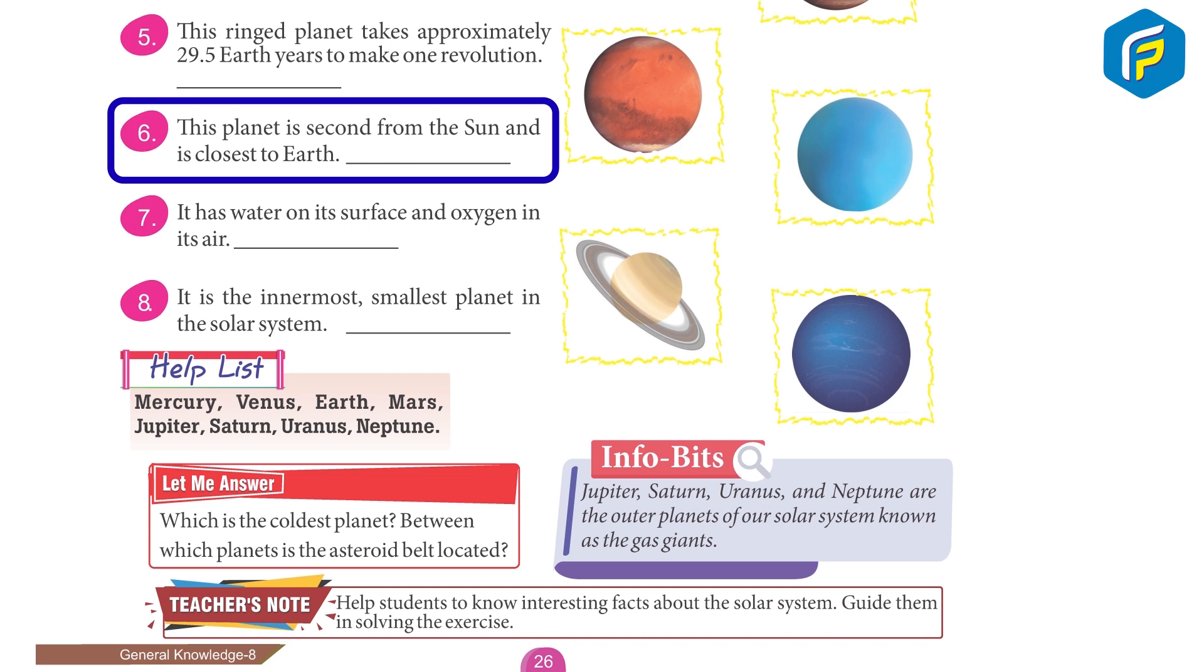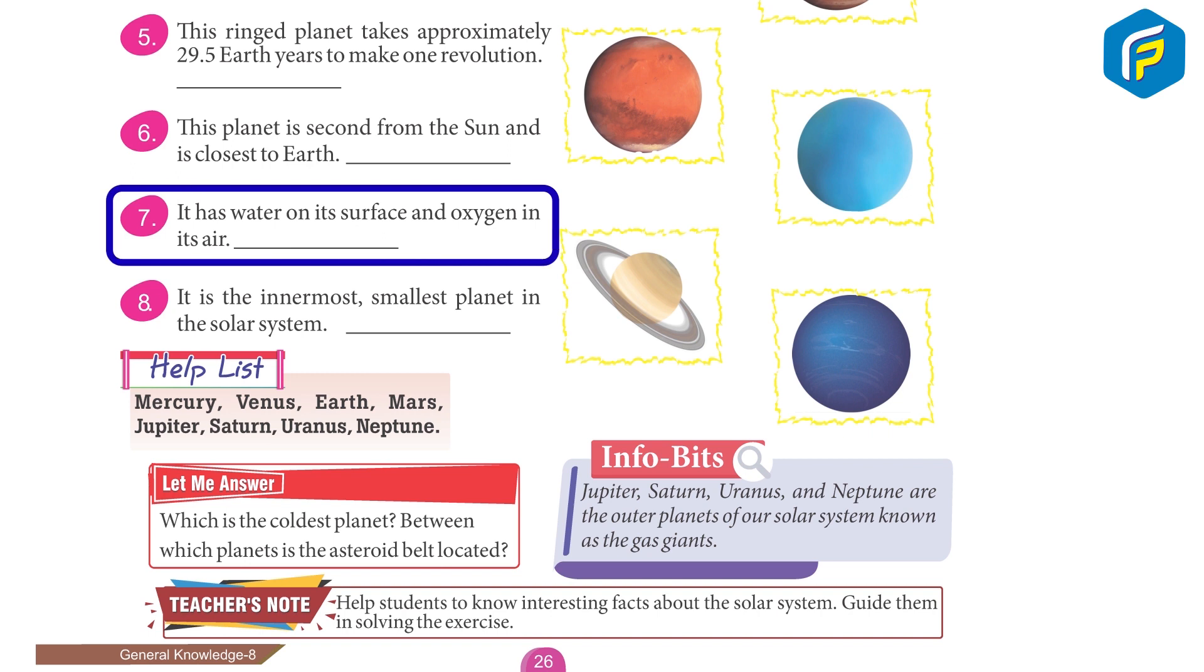6. This planet is second from the Sun and is closest to Earth. Venus. 7. It has water on its surface and oxygen in its air. Earth.